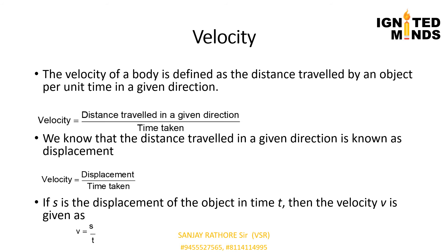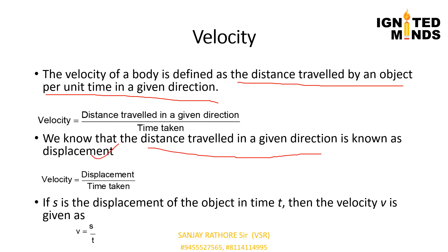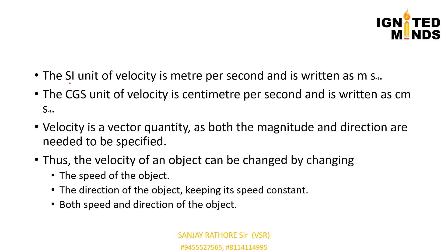Now we talk about velocity. When the direction of motion of an object is also specified, we use velocity instead of speed. Velocity of a body is defined as the distance travelled per unit time in a given direction. Distance travelled in a given direction is known as displacement, so velocity = displacement ÷ time taken. If displacement is S at time T, then velocity V = S/T. The SI unit of velocity is metre per second and the CGS unit is centimetre per second. Velocity is a vector quantity — it has both magnitude and direction.